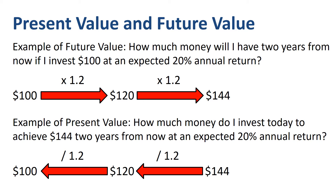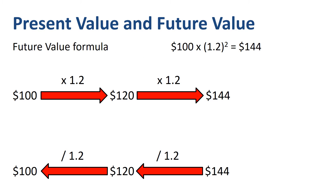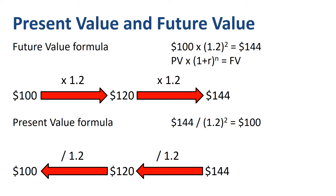The formula for future value is $100 times 1.2 to the power of 2 equals $144. In other words, present value times (1 plus the rate of return) to the power of the number of years equals future value. The formula for present value is $144 divided by 1.2 to the power of 2 equals $100. In other words, future value divided by (1 plus the rate of return) to the power of the number of years equals present value.